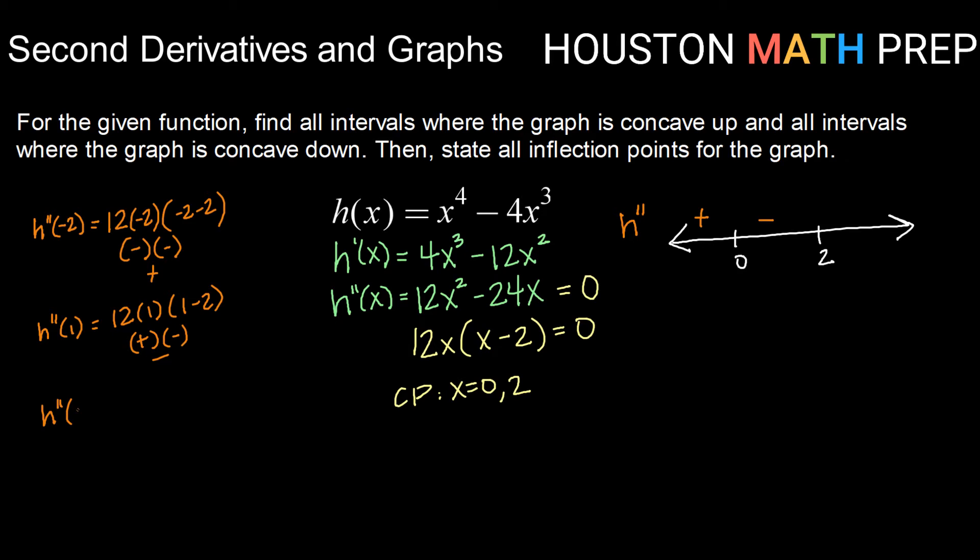And then finally, testing something larger than 2, whatever value you like, 12 times 4 times 4 minus 2. It's going to be a positive quantity times a positive quantity, which makes a positive overall.